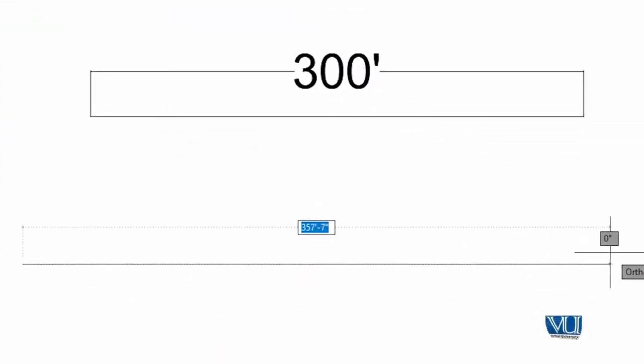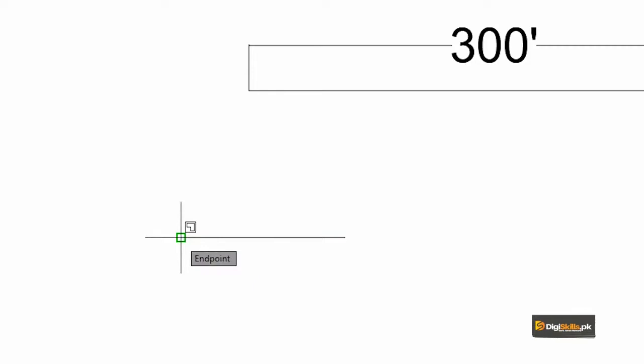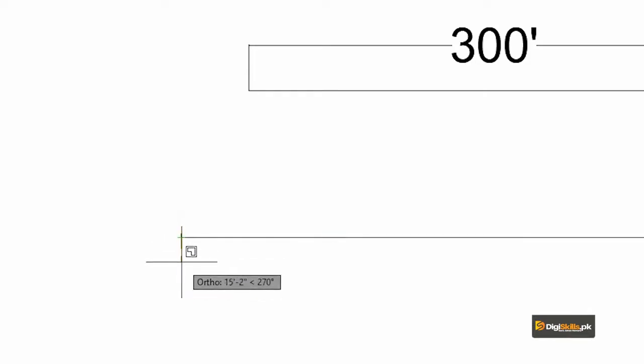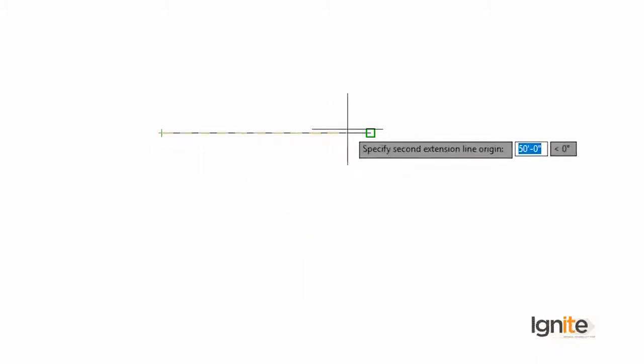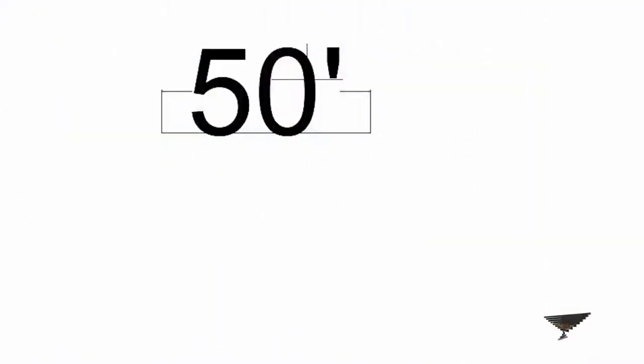We have another line which is also 100 feet. We enter the scale command, press Enter, select the line, specify the base point, and give a scale factor of 0.5. We then use DLI (Dimension Linear) and this line now measures 50 feet. This is how we vary our drawings using scale. We can apply this to any object — a rectangle — and increase or decrease it, just as we do with housing schemes and layout plans.